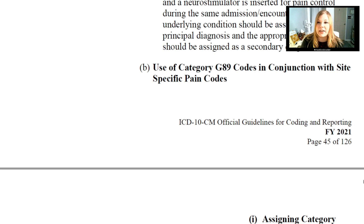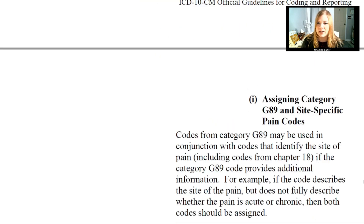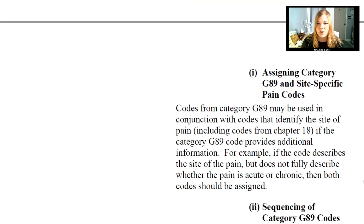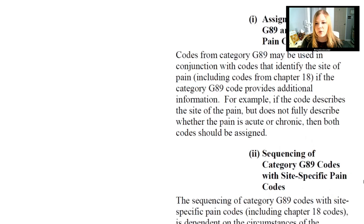Regarding use of category G89 codes in conjunction with site-specific pain codes: codes from category G89 may be used in conjunction with codes that identify the site of the pain, including codes from chapter 18, if the category G89 code provides additional information. For example, if the code describes the site of the pain but does not fully describe whether the pain is acute or chronic, then we can assign both codes.